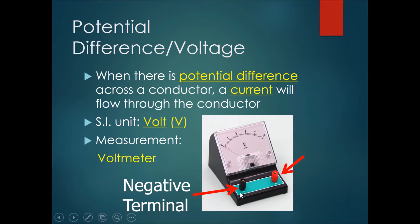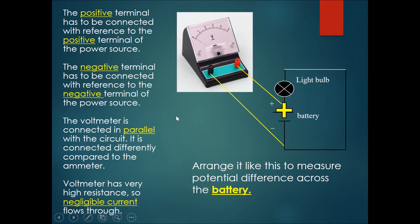Over here you can see a small little minus sign, this would be the negative terminal. And over here is a small little plus sign next to this connector, this would be the positive terminal. The positive terminal has to be connected with reference to the positive terminal of the power source. And the negative terminal has to be connected with reference to the negative terminal of the power source.